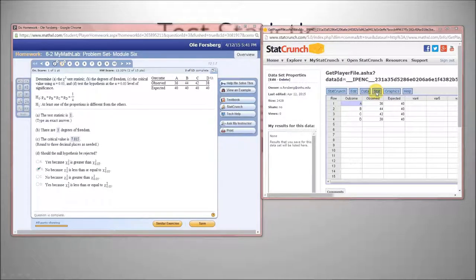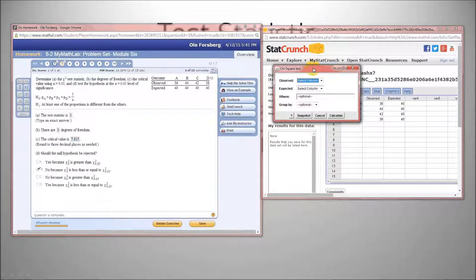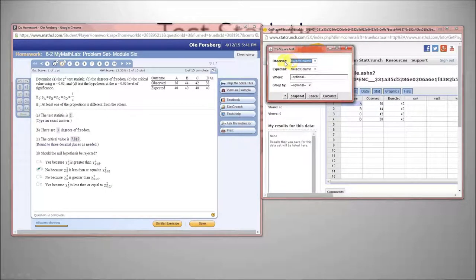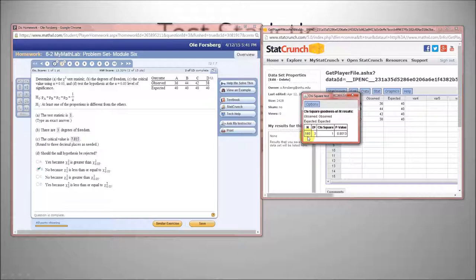So, we're going to go into Stat, Goodness of Fit, Chi-squared Test. And then what pops up is we need to specify which column is for observed, which is for expected. These two we're not going to be bothered with. Calculate. So, what does it pop up? It gives us sample size, degrees of freedom, then the value of the test statistic, and the p-value.